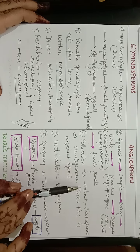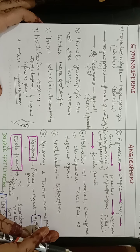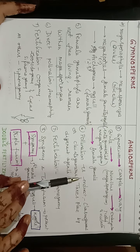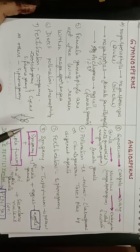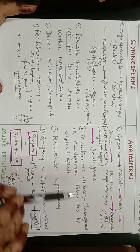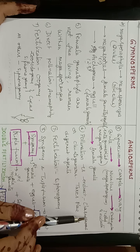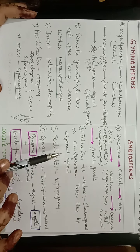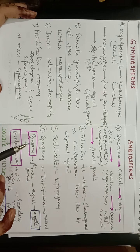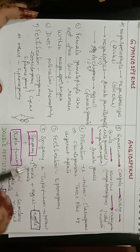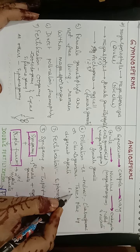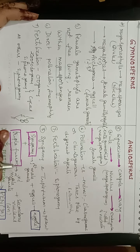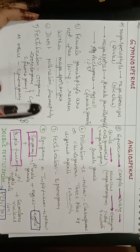In angiosperms, indirect pollination occurs — pollen grains first fall on the stigma and then germinate, and male gametes reach the ovule through the pollen tube. This can be chasmogamous (open flower) or cleistogamous (closed flower). Many agents are present: wind (anemophily), water (hydrophily), and insects (entomophily) — with insects being the most common.